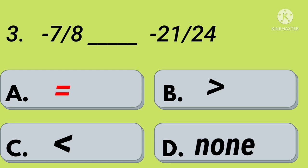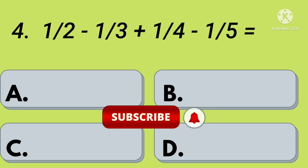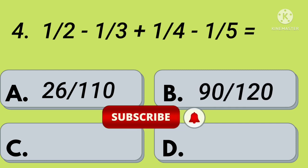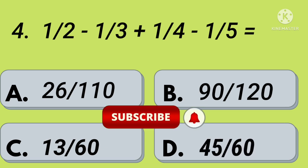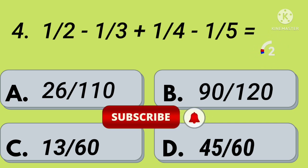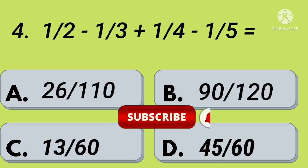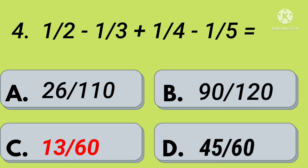Fourth question: 1 by 2 minus 1 by 3 plus 1 by 4 minus 1 by 5 equals — option A: 26 by 110, option B: 90 by 120, option C: 13 by 60, option D: 45 by 60. Your time starts now. Right, option C: 13 by 60.